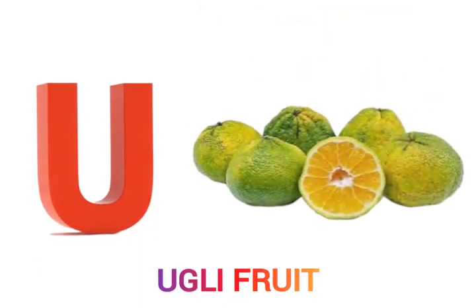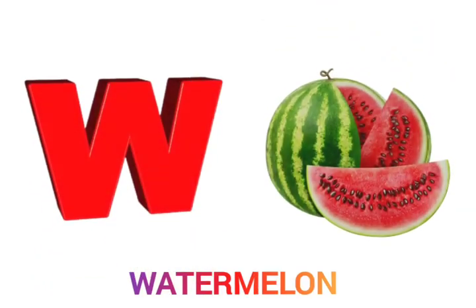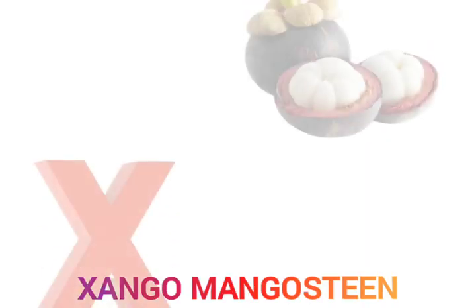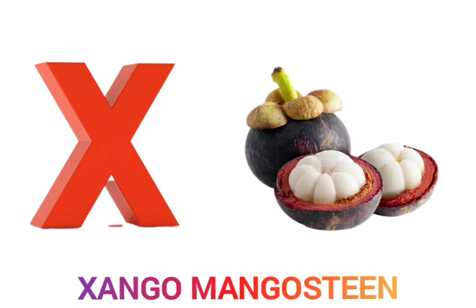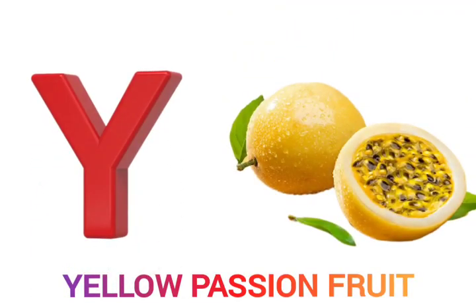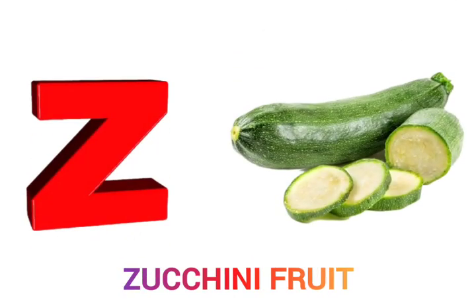U is for Ugly Fruit. U-U-Ugly Fruit. Y is for Yellow Passion Fruit. Yellow Passion Fruit. Z is for Zucchini Fruit. Zucchini Fruit.